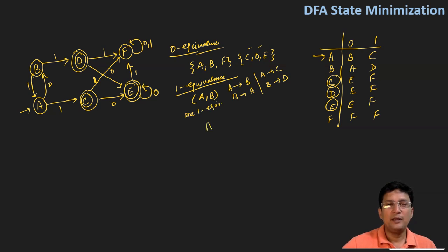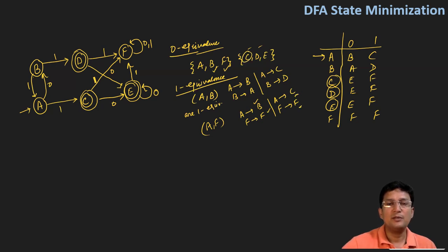Now taking the pair A and F: A on zero goes to B, F on zero goes to F. Then A on one goes to C and F on one goes to F. Are B and F in the same set? Yes, they are. Are C and F in the same set? No — C belongs to one set and F belongs to a different set. So A and F are not one equivalent, meaning F belongs to a different set from A and B.